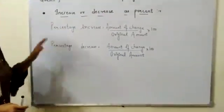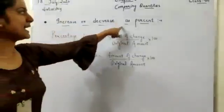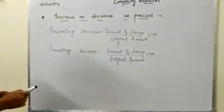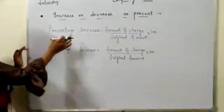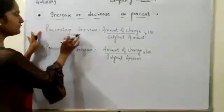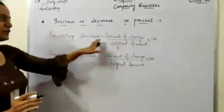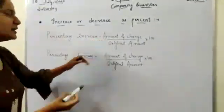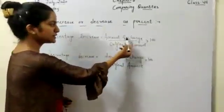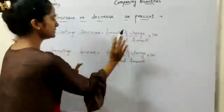The next topic is increase or decrease as percent. First we will discuss the formula. If we want to find out percentage increase, the formula is: amount of change upon original amount, into 100.